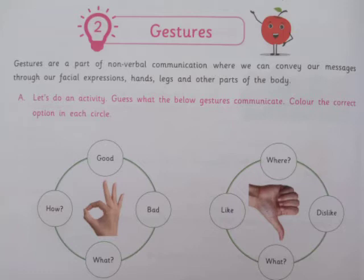Exercise number A. Let's do an activity. Guess what the below gestures communicate. Color the correct option in each circle. Activity करते हैं — उसमें आपको नीचे दिये गए gesture में देखना है और चेक करना है कि answer क्या है. उसके right answer के circle में आपको color करना है. Color आप any color use कर सकते हो, except only black and white.